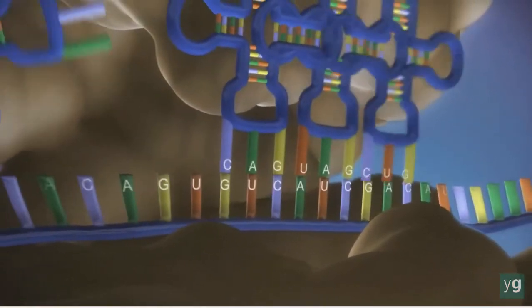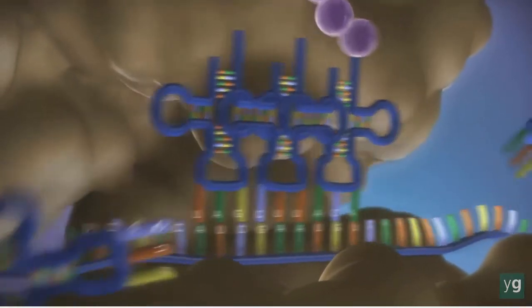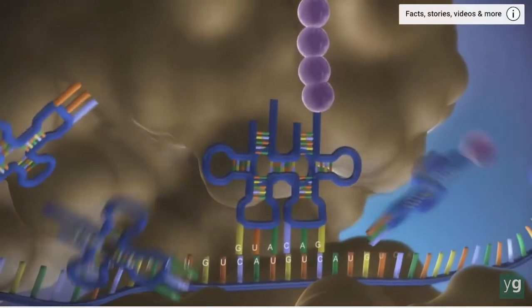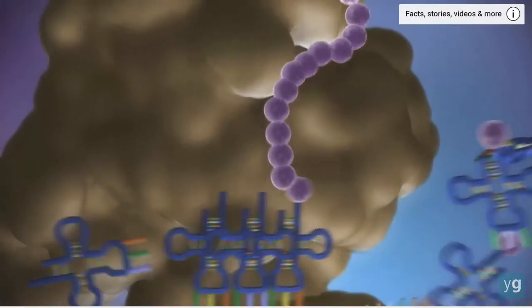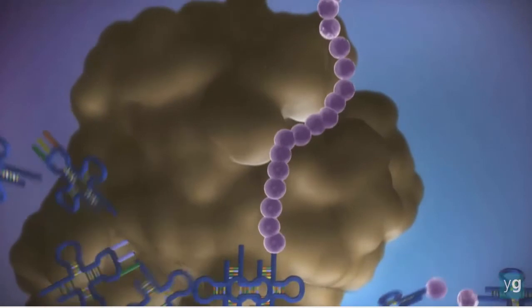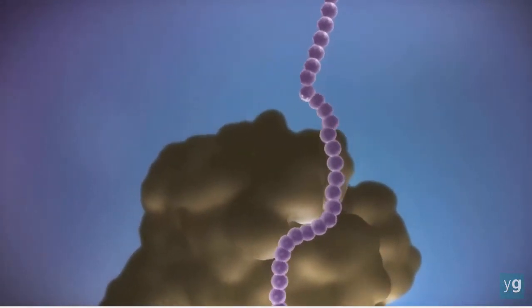The messenger RNA is read three bases at a time. As each triplet is read, a transfer RNA delivers the corresponding amino acid. This is added to a growing chain of amino acids.